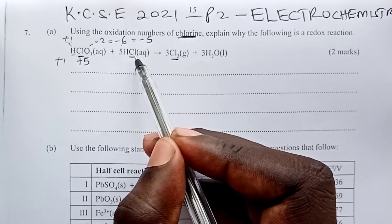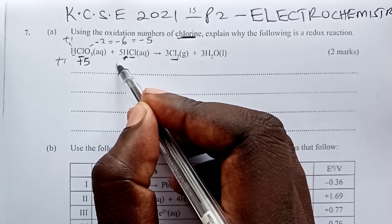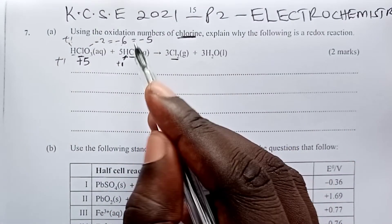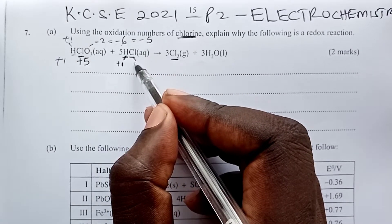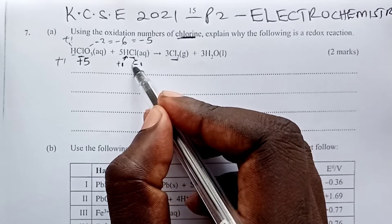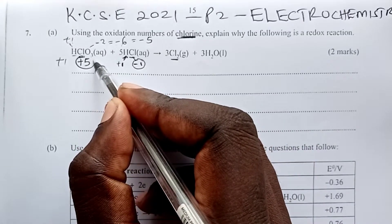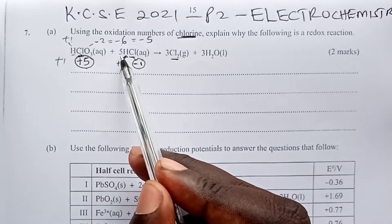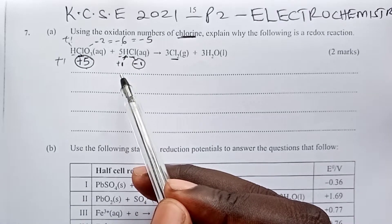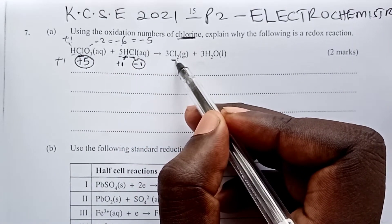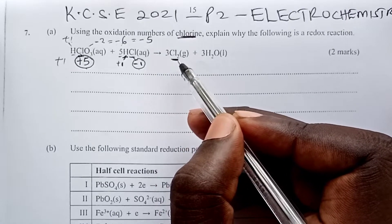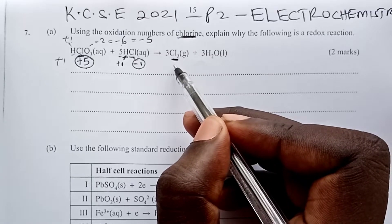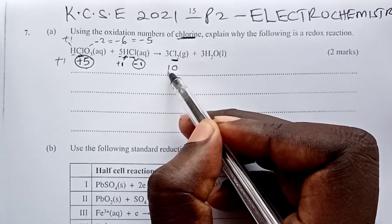Moving on to HCl, this hydrogen will contribute an apparent charge of positive 1, then chlorine would cancel that out by having a charge of minus 1. Let me circle those of chlorine so that we don't confuse. Here the oxidation number of chlorine is positive 5, here it is negative 1. Note that the balancing figure is not used when calculating oxidation numbers. For this chlorine, it is uncombined — it has not reacted with any other element. So for uncombined elements, oxidation numbers are normally 0.